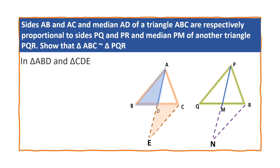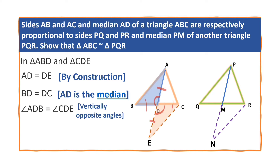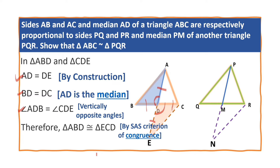In triangles ABD and CDE: AD is equal to DE by construction; BD is equal to DC since AD is the median; and angle ADB is equal to angle CDE as they are vertically opposite angles. Therefore, by the SAS congruency rule, triangle ABD is congruent to triangle ECD. This implies AB is equal to CE by corresponding parts of congruent triangles — let this be equation 1.